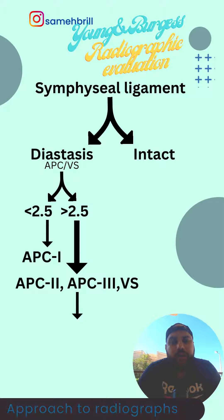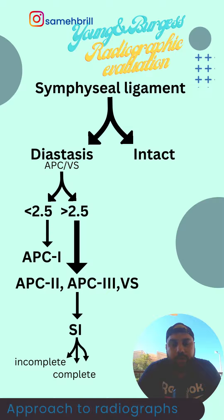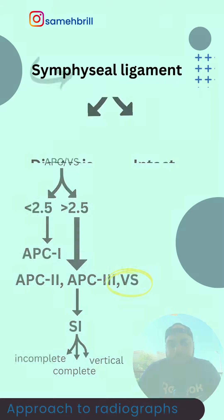I take a look at the sacroiliac joint right away. If the sacroiliac joint has an anterior disruption, that's an APC2. If there is a complete disruption, that's an APC3. And if there is a vertical displacement, that's a VS.